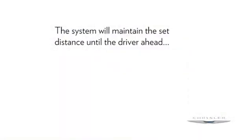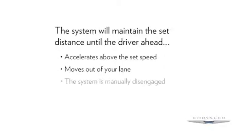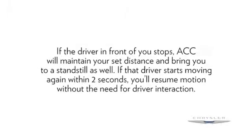But when a slower-moving driver enters your lane, the system automatically adjusts your speed to maintain the distance setting. You'll see the sensed vehicle indicator icon in the instrument cluster. The system will maintain the set distance until the driver ahead accelerates above the set speed, moves out of your lane, or until the system is manually disengaged. If the driver in front of you stops, ACC will maintain your set distance and bring you to a standstill as well.